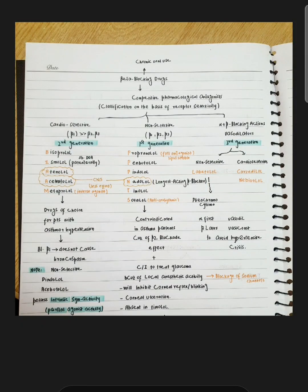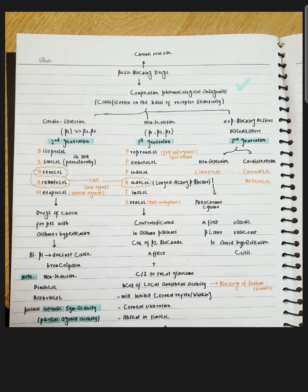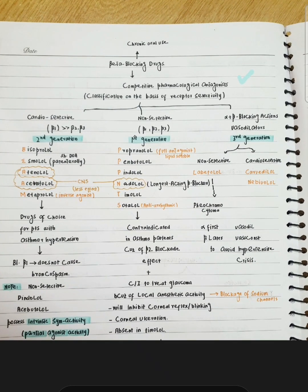Bismillah ar-Rahman ar-Rahim. Let's talk about beta-blocking drugs. They are competitive pharmacological antagonists, meaning that by increasing the concentration of the agonist, the effect can be overcome.